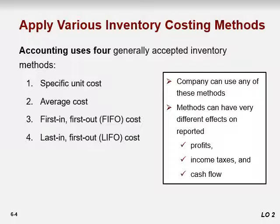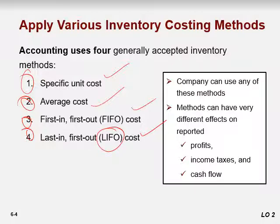To compute cost of goods sold and the cost of ending inventory still on hand, we must assign a unit cost to items. That unit cost comes from four inventory methods: one is called the specific unit method, one is called average, one is called first-in first-out — FIFO — and the fourth is called last-in first-out — LIFO.